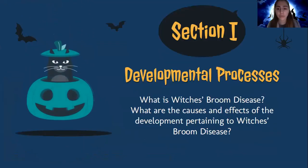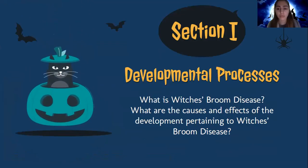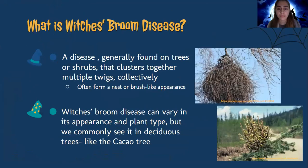To further explore the developmental process, I'm going to explain what Witch's Broom disease is and its causes and effects. Witch's Broom disease is a disease that generally is found on shrubs or trees that cluster together to make multiple twigs collectively. Often they form a nest or brush-like appearance. Witch's Broom disease can vary in appearance and plant type, but we commonly see it in deciduous trees like the cacao tree.